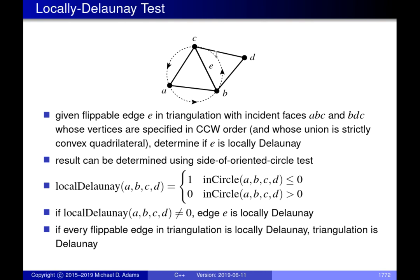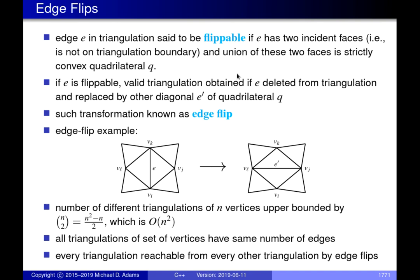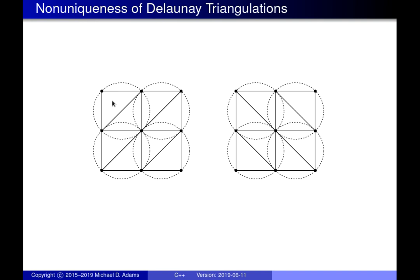In the locally preferred directions Delaunay test, we introduce two directions denoted by vectors u and v. Going back to an earlier slide, we have an example of two triangulations of the same nine-point grid. Comparing the left and right figures, some edges differ — for instance, one edge has been replaced by the opposite diagonal of the square it appears in.